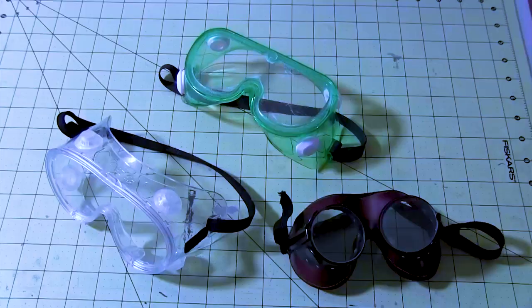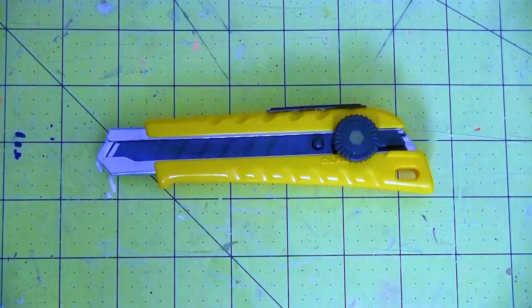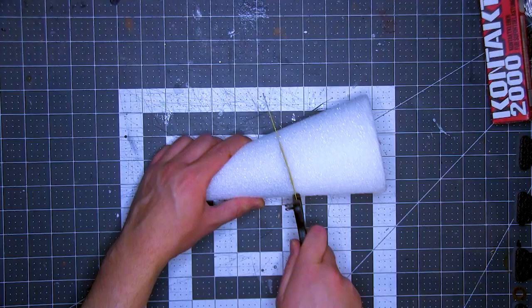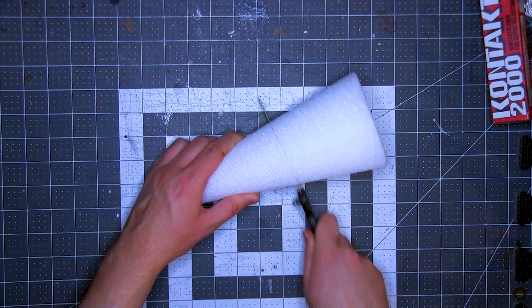First I cut the styrofoam cone into segments by making diagonal cuts using a sort of half hacksaw here. This is way overkill - you could use a steak knife.